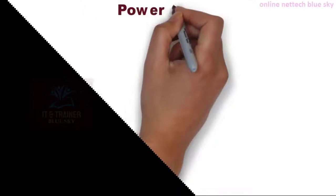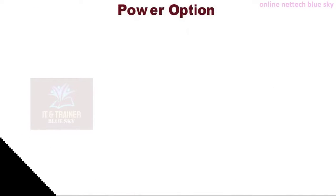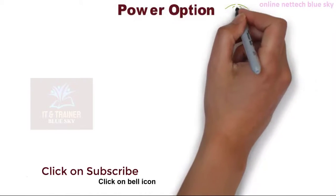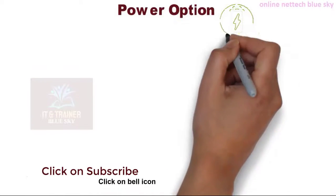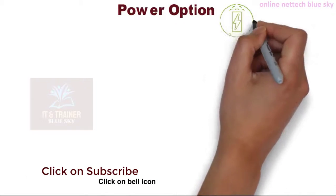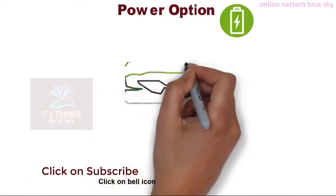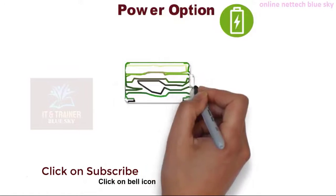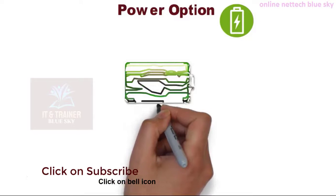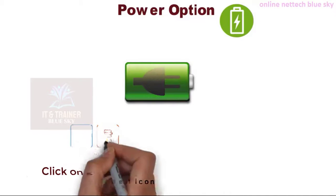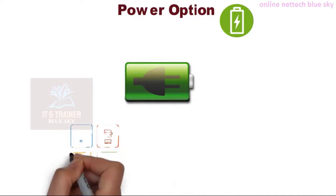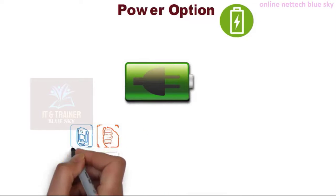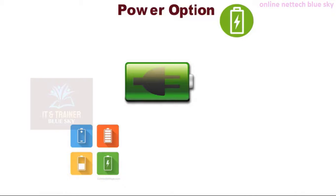So what is the power option? First understand about the power option and why use this power option in Microsoft Windows XP, Windows 7, Windows 8, Windows 10. Power options is one type of control for your computer and for your laptop battery — because battery life in your laptop is important.